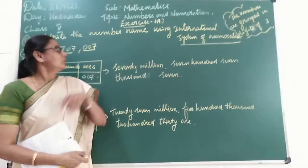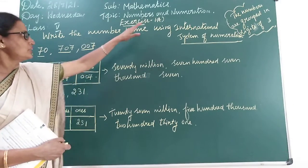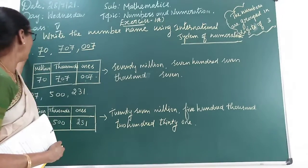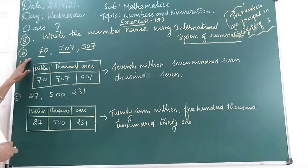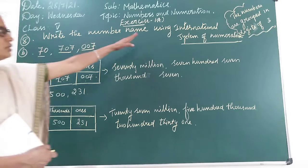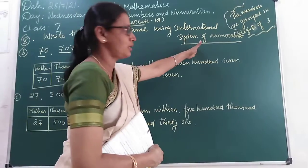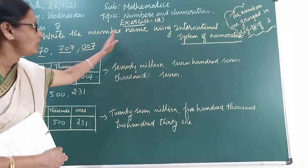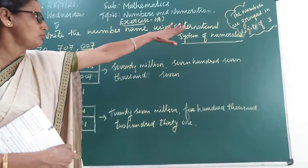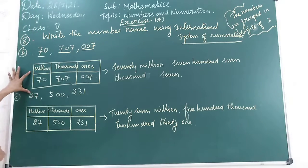Good morning students. Congratulations on exercises 1 to 8. Already we have the answers of the children in this B sum. Now, write the number name using International System of Numeration. You have to write this name in International System of Numeration, children.